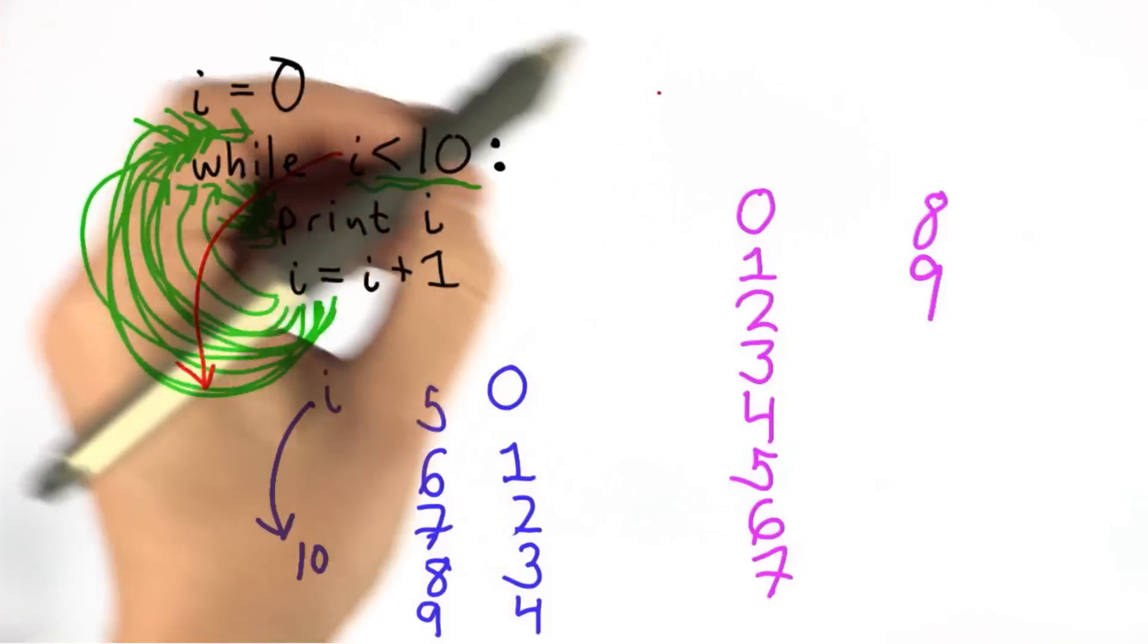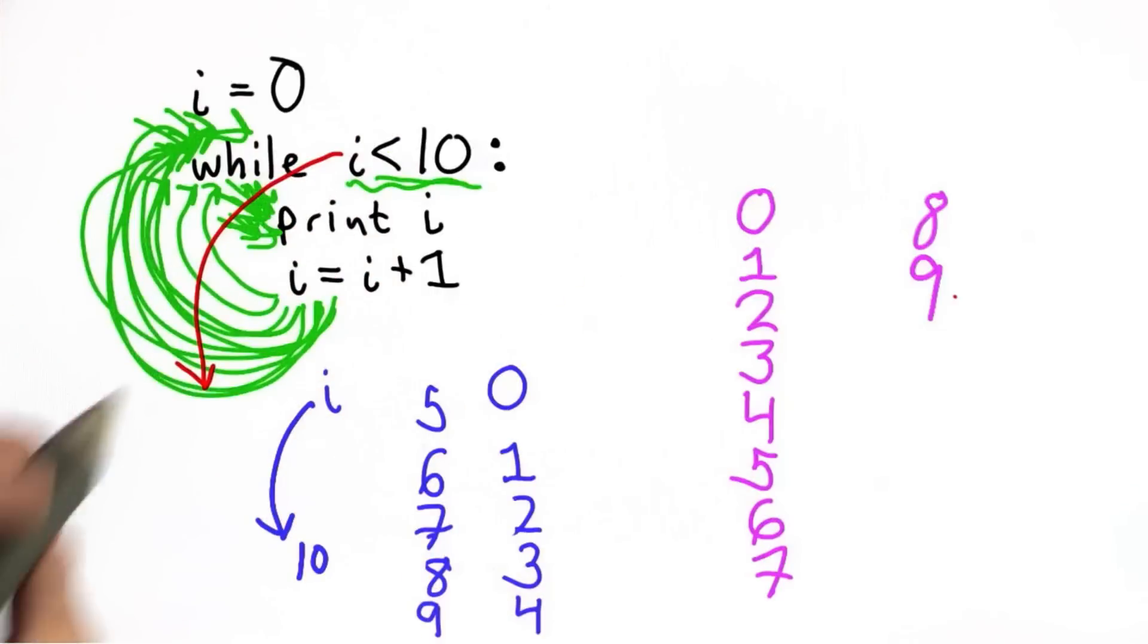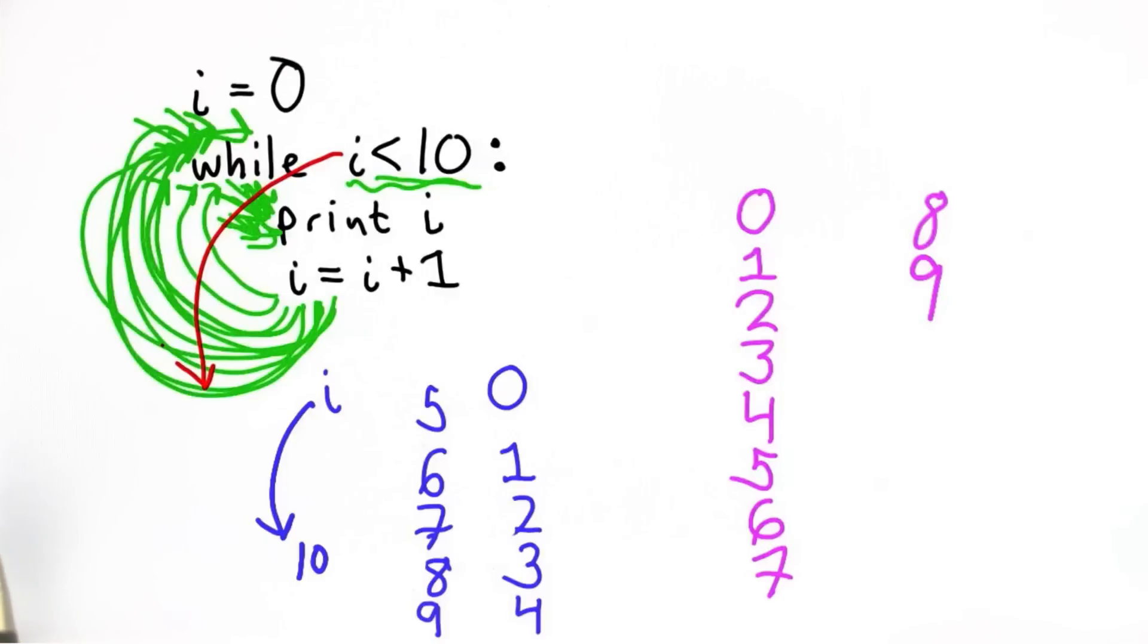So at the end of the loop, what we've done, we've gone through it 10 times. We've printed the numbers from 0 to 9. The new value of i will be 10. If we do anything here that uses the value of i, we'll see that the value of i is 10.